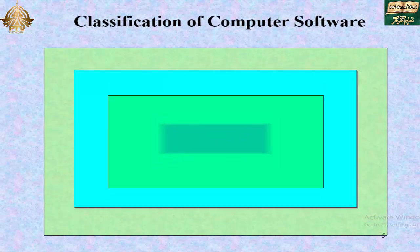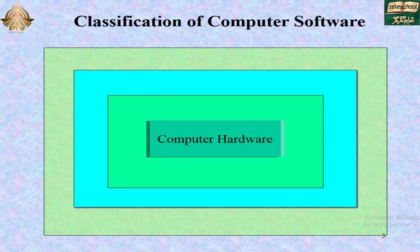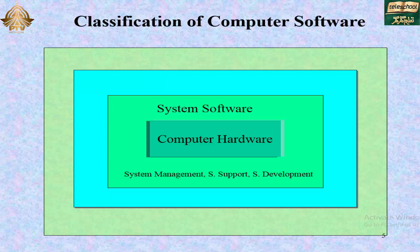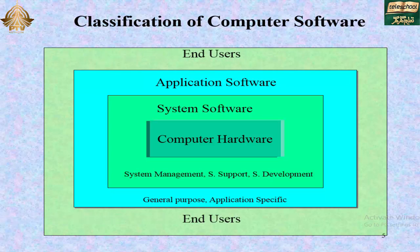Classification of computer software includes computer hardware and system software. System software covers system management, support center, and system development. Application software includes general purpose applications and specific applications. These connect to the end users.